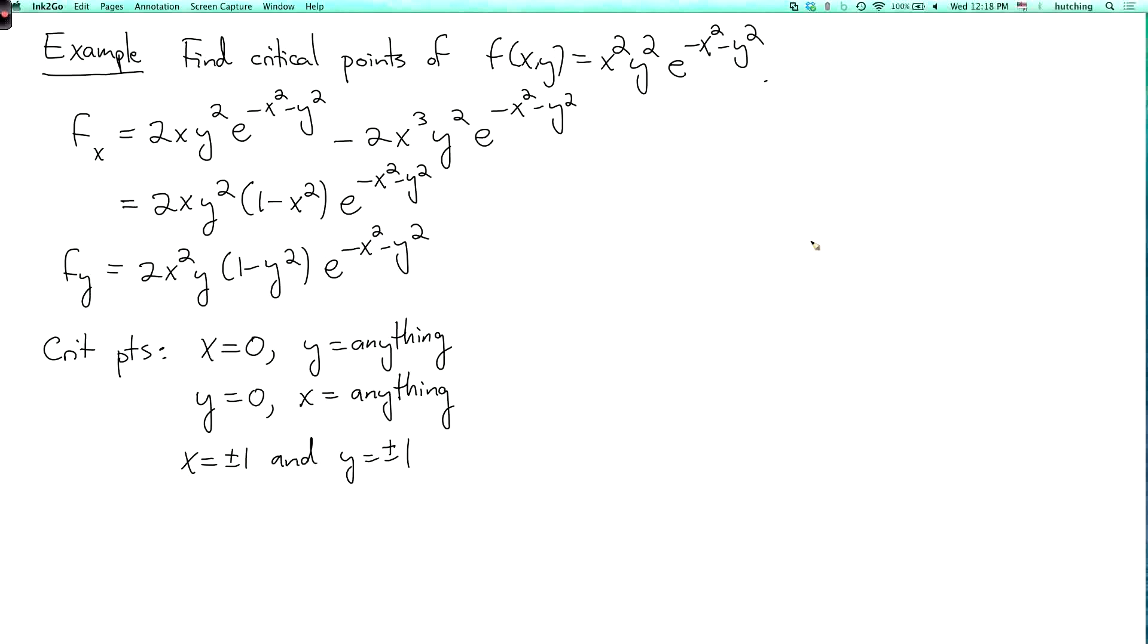So if I draw the picture of the plane, so the set of critical points, I'll draw it in red here, it consists of the entire x-axis, the entire y-axis, and then four additional points. So 1 1, 1 minus 1, minus 1 1, and minus 1 minus 1.